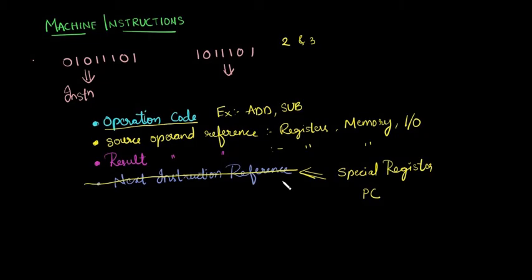In the coming videos we will learn more deeply about what are the types of operation codes that we have, types of operations that a processor can perform, and the operands—how can we address the operands if they are in registers or if they are in memory, what are the various techniques to address the operands in an efficient way, and the storage of the result as well in the future tutorials.